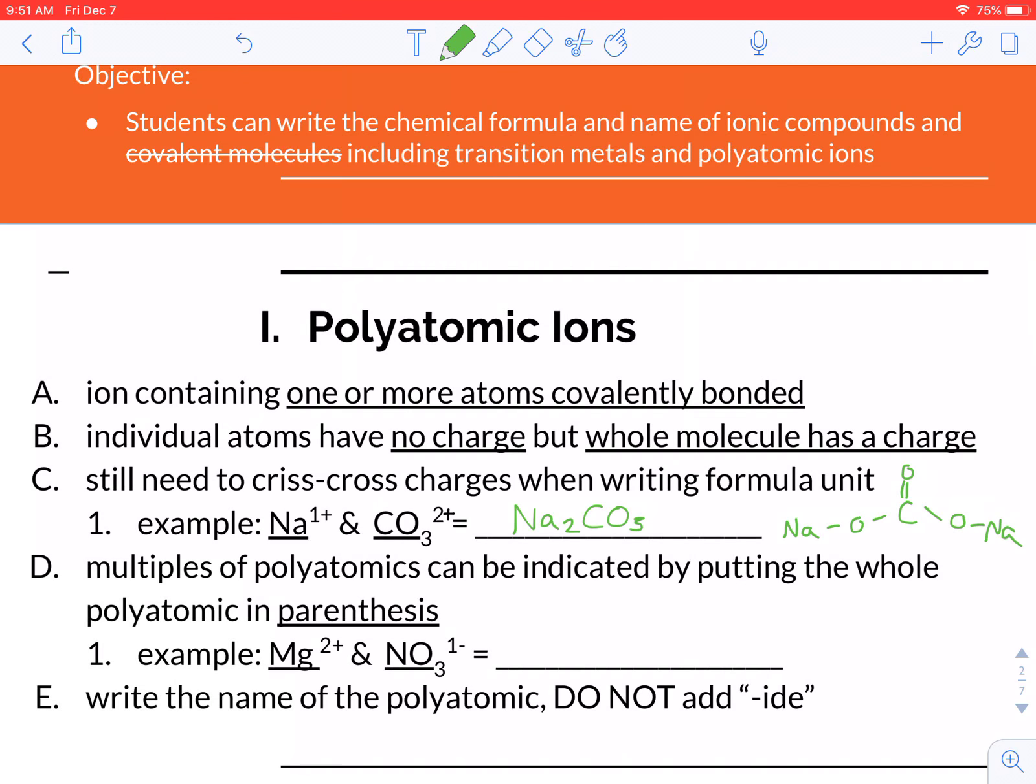In that example that we just did, there was not a subscript that had to go next to the carbonate, but in this example, we'll have one of those. So if we crisscross our charges here, the Mg would get a 1, so we can leave that off, and our NO3 would get a 2. This makes it look like there's one nitrogen and 32 oxygens. That's definitely not what this molecule looks like.